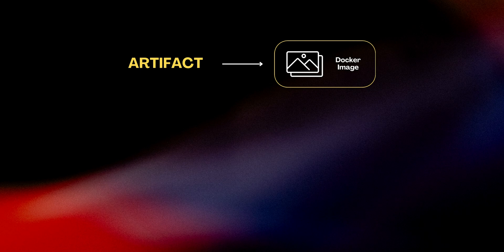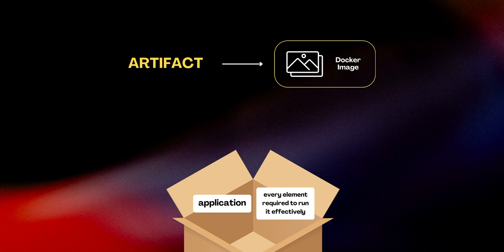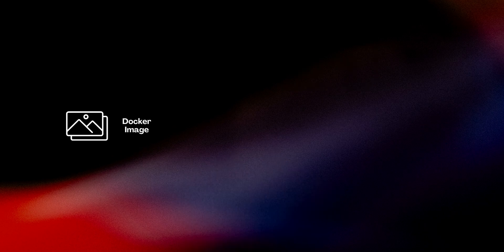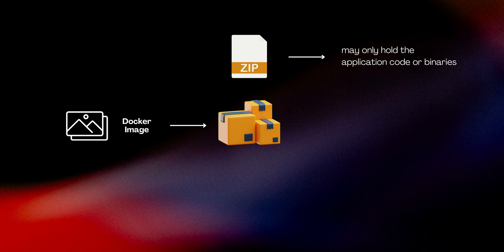In the world of Docker, the artifact that we create is known as a Docker image. However, this isn't just a bundle of your application's compiled code. A Docker image is a comprehensive package that encapsulates not only your application but also every element required to run it effectively. This includes the application's complete runtime environment. Think of a Docker image as an all-encompassing package, something similar to a zip or jar file but with far more contents.